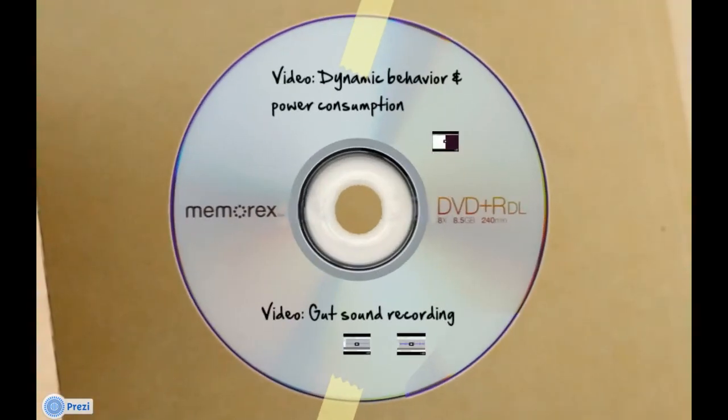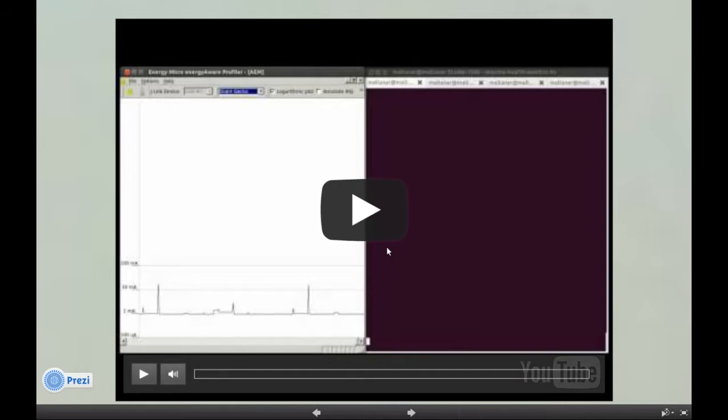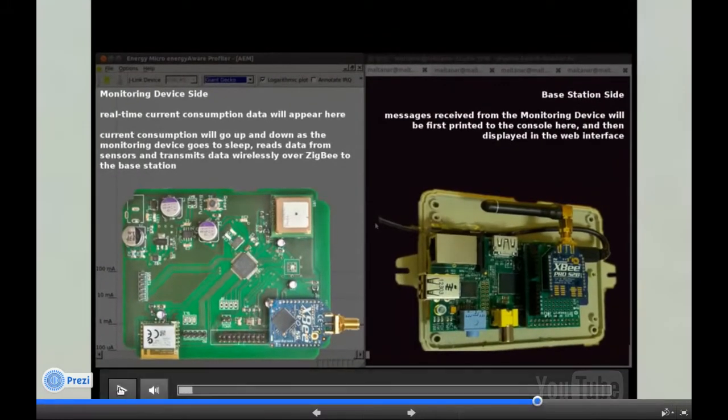This video shows a demonstration of the running system and how it was optimized for low power consumption. In the left frame, you will see the real-time current consumption of the monitoring device while it executes certain tasks. The right frame shows the console of the base station and displays how data is received and presented.